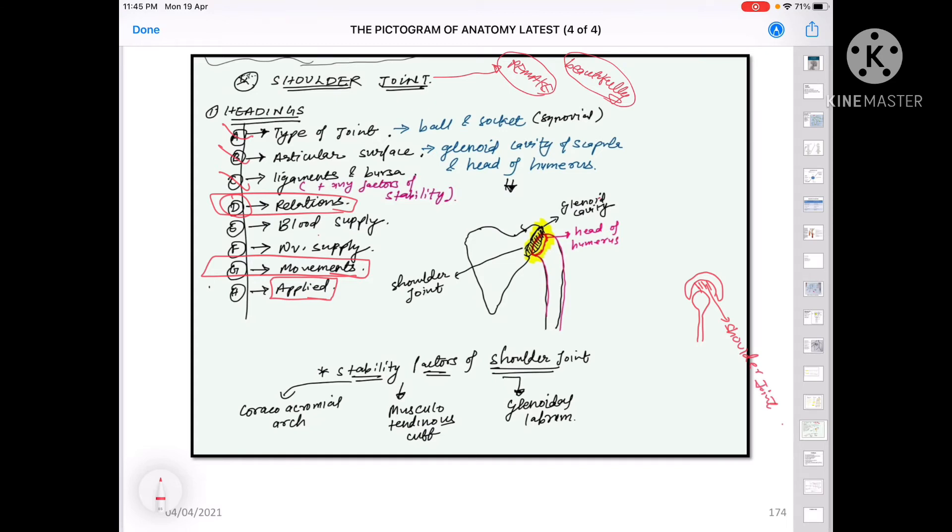Articular surface - what is the articular surface? Which structures of which bone are making that joint? Two bones are included in shoulder joint: humerus and scapula. The articular surface means which part of humerus and which part of scapula are making the shoulder joint. In simple terms, the head of humerus and glenoid cavity of scapula form the articular surface of the shoulder joint.